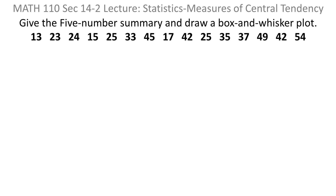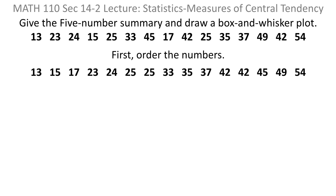Here's a set of data, and we're supposed to give the five-number summary and then draw a box and whisker plot. To do the five-number summary, you have to find a median. In order to find a median, you have to put the numbers in order. So never forget that when you're doing medians, you have to put the numbers in order. So let's do that first.